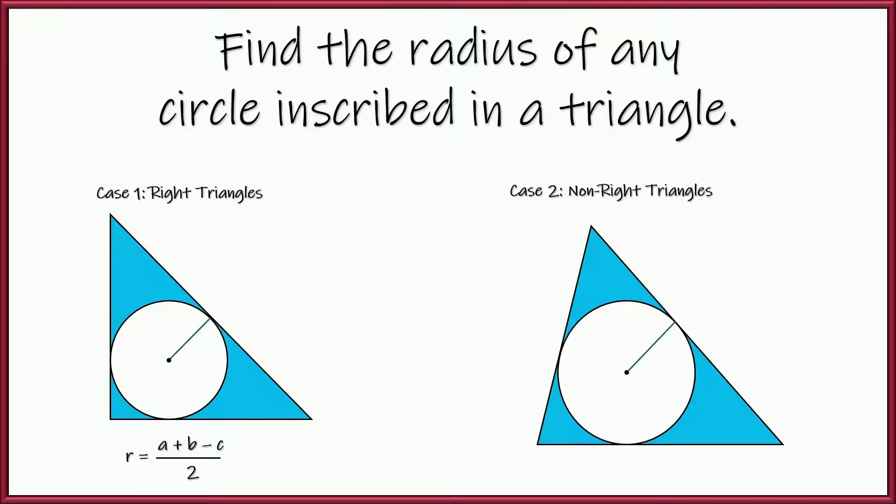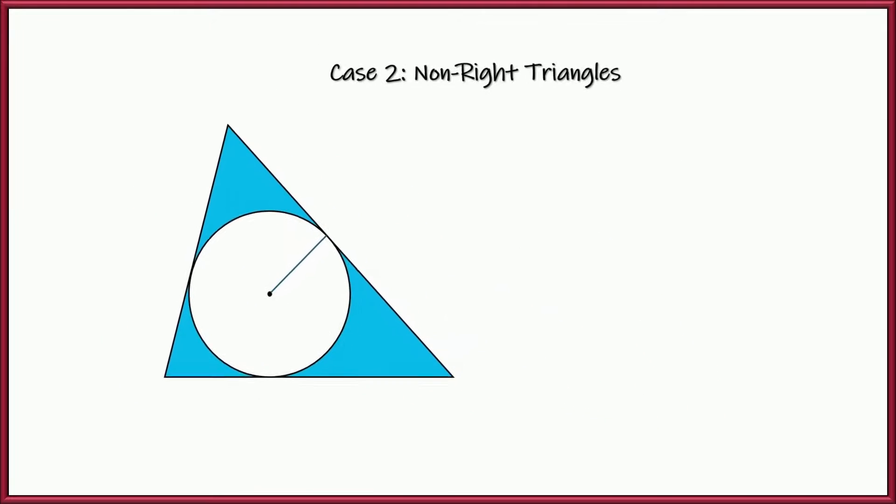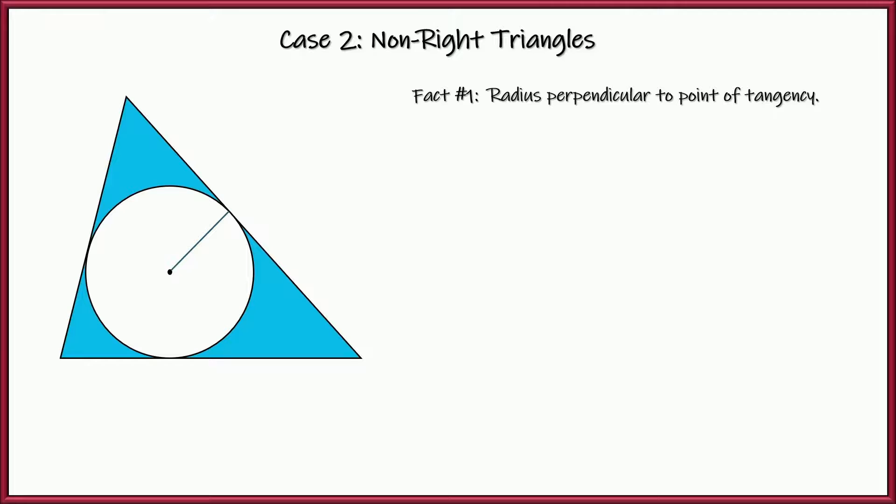So now let's dive into the case for the non-right triangle, shall we? Same fact as before, the radius is perpendicular to the sides at the point of tangency. So we're going to construct our radii like that, and they're all perpendicular.